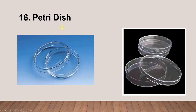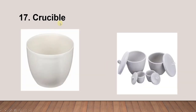Next is the petri dish. We have it made from either glass or plastic. Be careful — never put plastic in the oven. If you want to use it in the oven you have to use a glass petri dish. Next is the crucible, which usually comes with a cover.